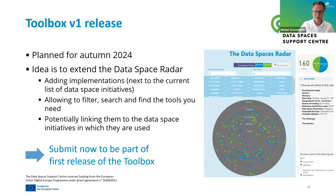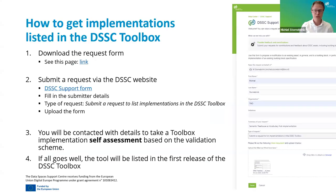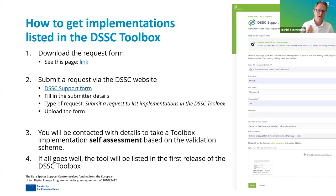That leaves the question: how does that work? A short overview — you can go to the request form at the DSSC support website; a link is provided in the webinar sheets and on the DSSC website. There you can submit a request to list implementations in the toolbox. You will be asked to fill in a form with metadata about the implementation — who created it, the readiness level, whether it's already being used in a data space initiative, and more. After you submit, you will be contacted to provide a self-assessment where you can validate whether the implementation complies with the DSSC blueprint — more on that by Sonja — and if all goes well, we will include the implementation in the first release of the toolbox.